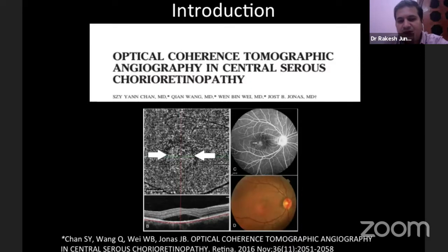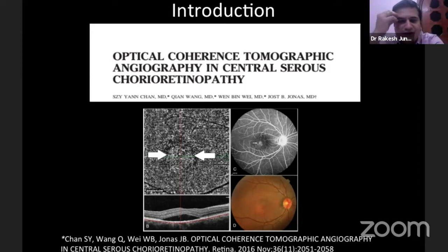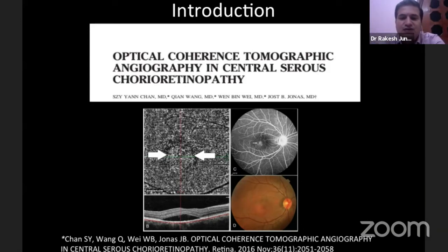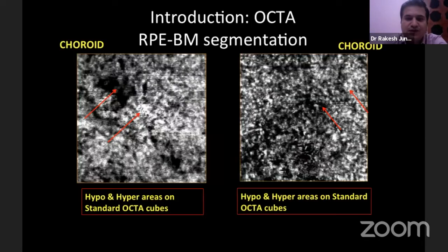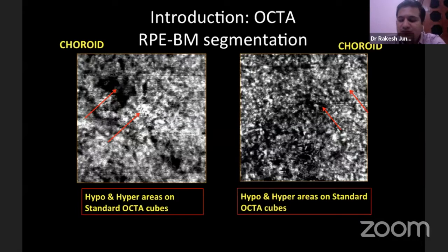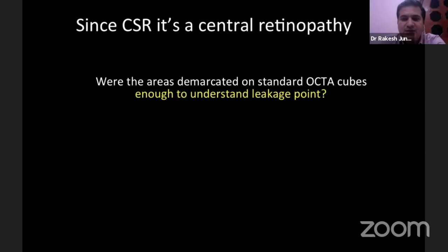A paper in the journal identified OCT angiography findings in CSR, but one could not exactly delineate the area correlating with the fluorescein or ICG angiography, and it was therefore not very useful in terms of treatment. This is what we get in an OCT angiography picture at the level of the choriocapillaris or deep network — areas we still cannot correlate with fluorescein or ICG angiography from a clinical standpoint.